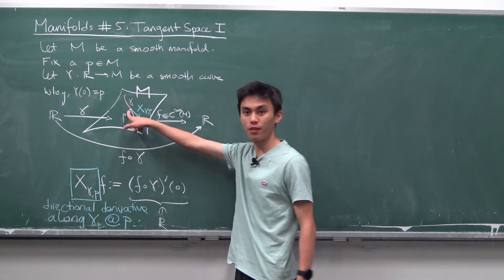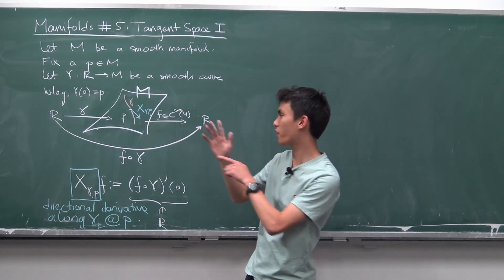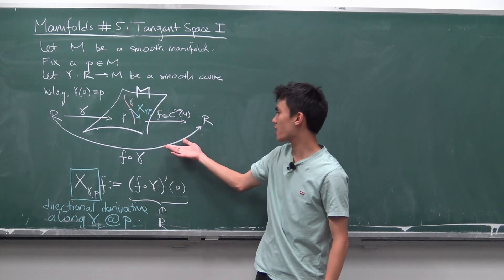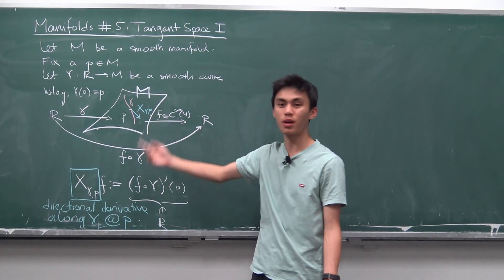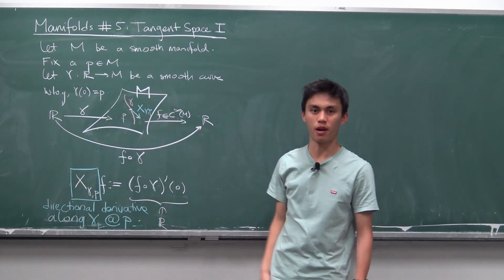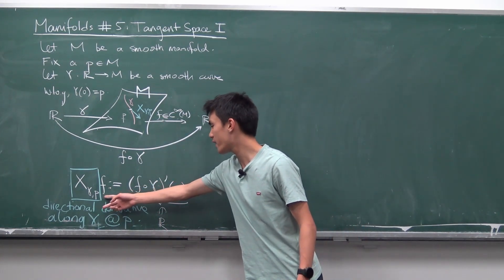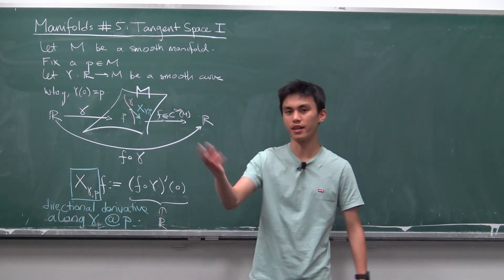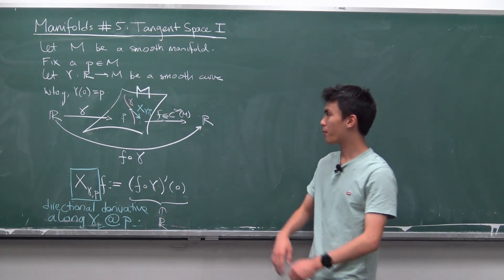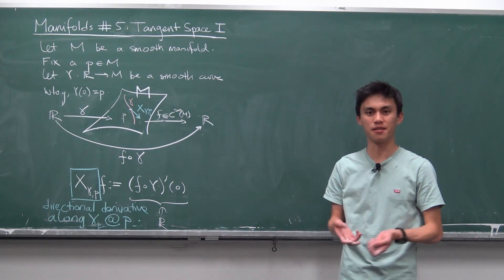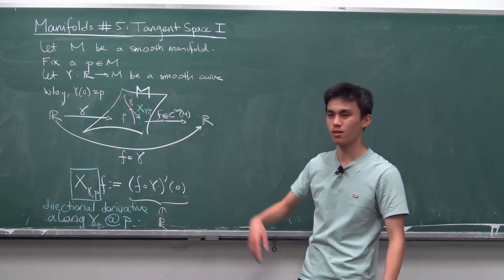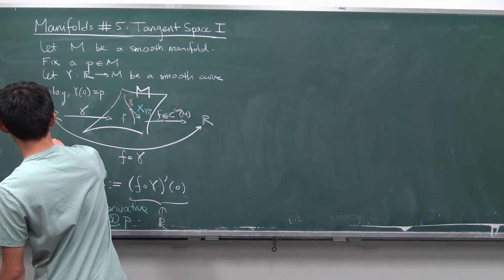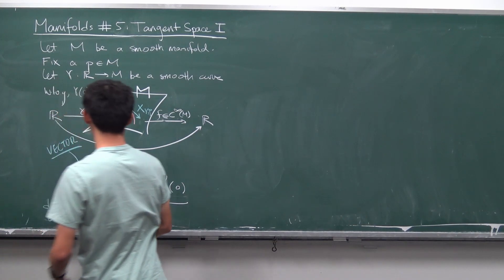If we have a curve and we look at point P, we have this idea of going along a specific direction. The only way to recover this is to consider the directional derivative operator X_{γ,p}, which acts on smooth functions. We define its action on a smooth function this way. X_{γ,p} is a directional derivative operator — it's funny to call it a tangent vector, but we're constructing a tangent vector space, and the elements of that space are what we call vectors.